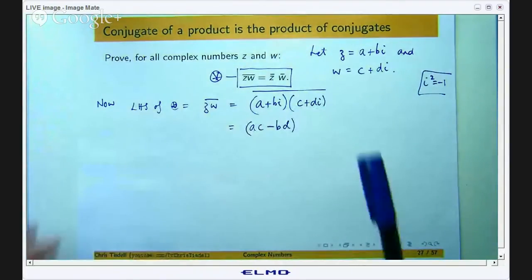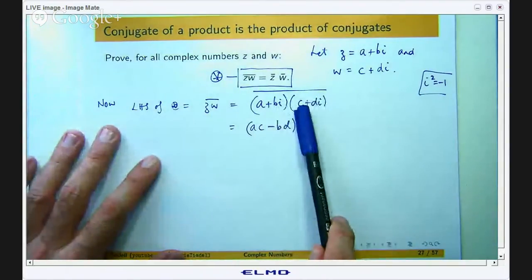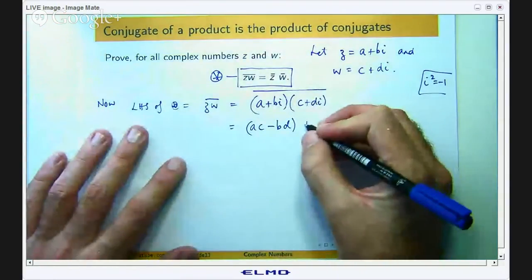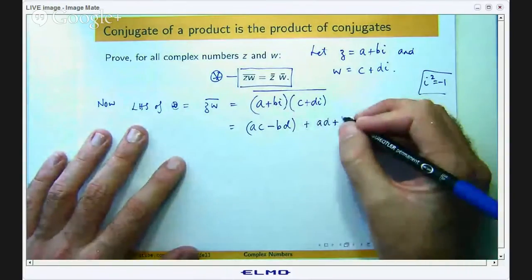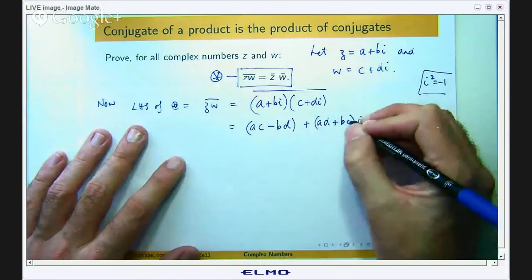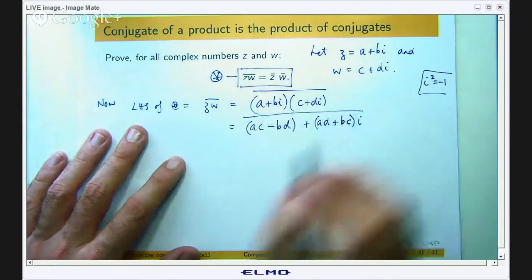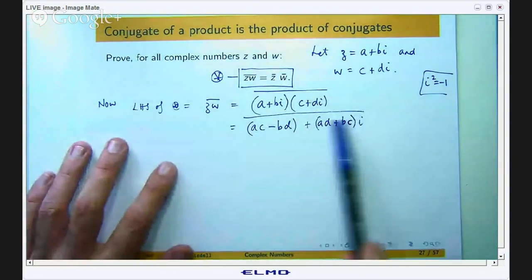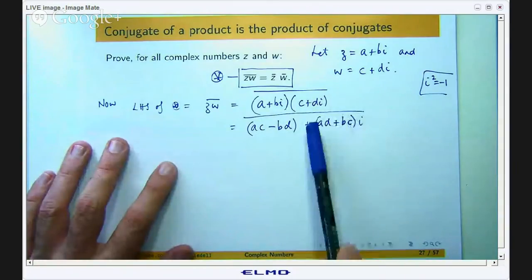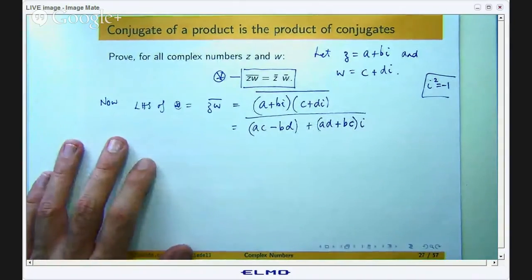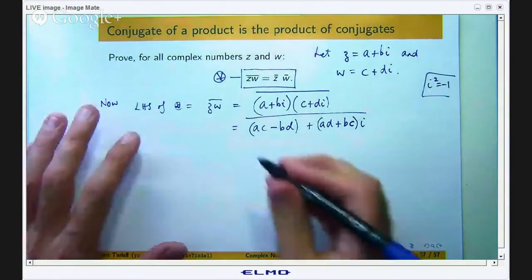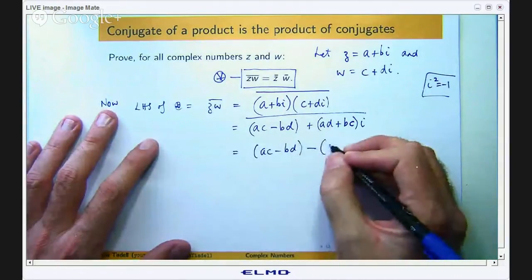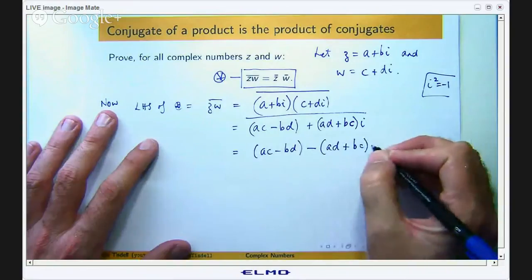Okay and what about the other part? Well this times this will give us bci and this times this will give us adi. So if I place them all together, okay I want to take the conjugate of that. Okay well I know that all I have to do is take the conjugate of this because I have written it out nicely is to change the sign on this coefficient of i, change the sign on the imaginary part. Okay so this is then ac minus bd minus ad plus bc i.